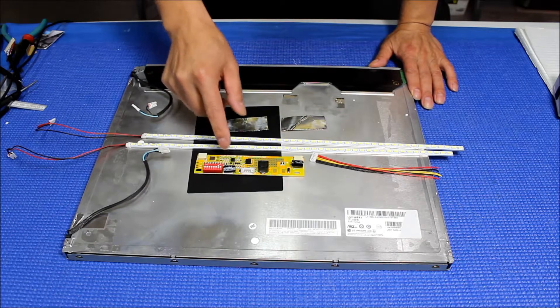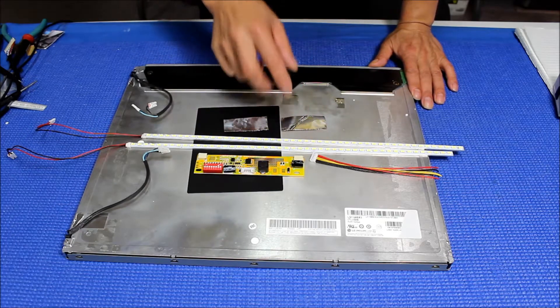This kit comes with two LED strips, one LED driver, wire harness, and a couple of aluminum foils.